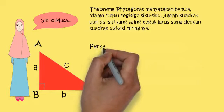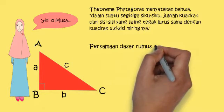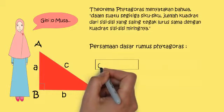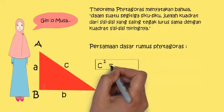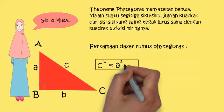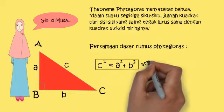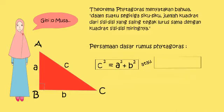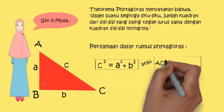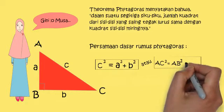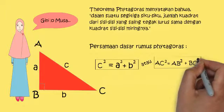Sekarang kita masuk ke persamaan dasar rumus Pitagoras. C kuadrat sama dengan A kuadrat plus B kuadrat. Atau, kita juga dapat menggunakan AC kuadrat sama dengan AB kuadrat plus BC kuadrat.